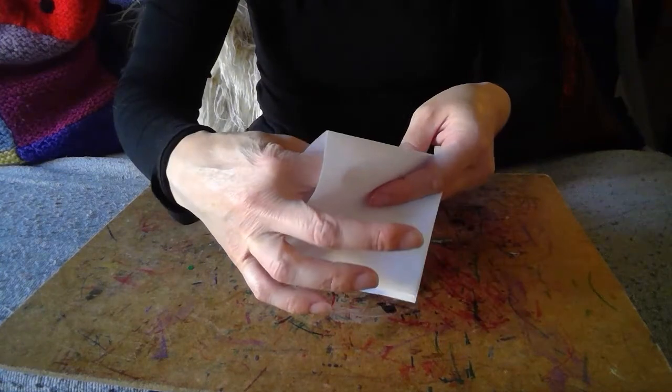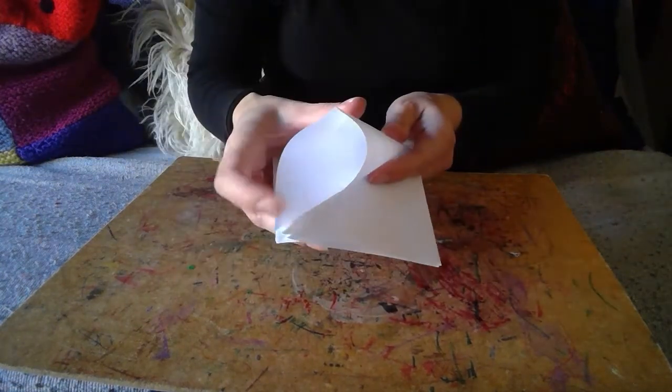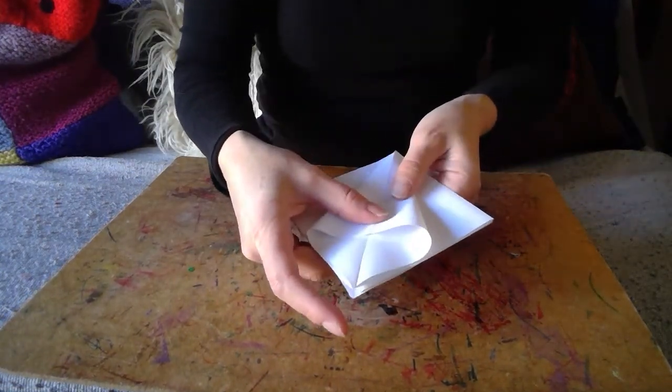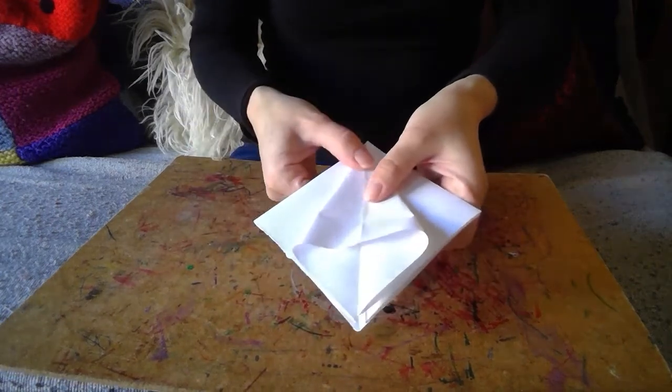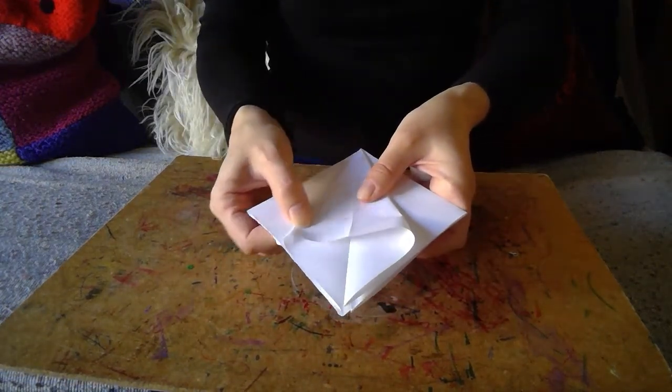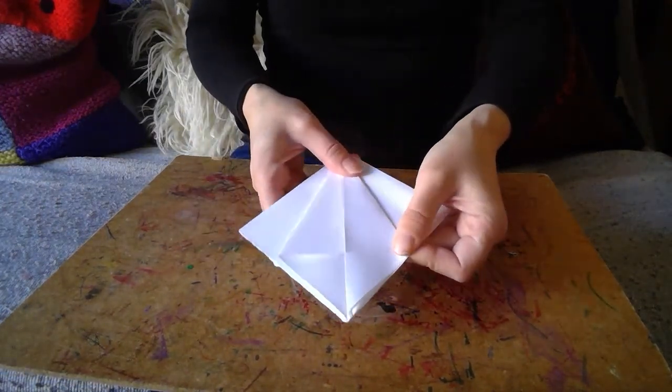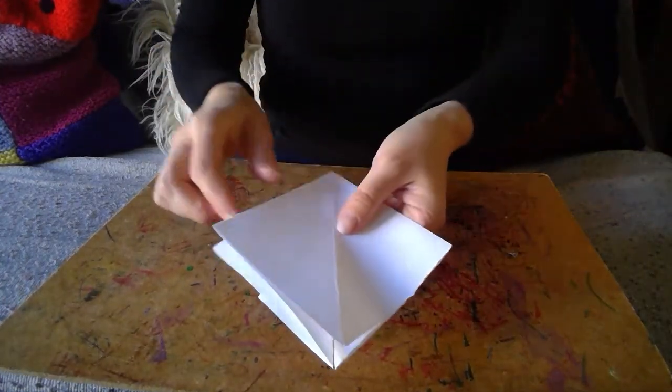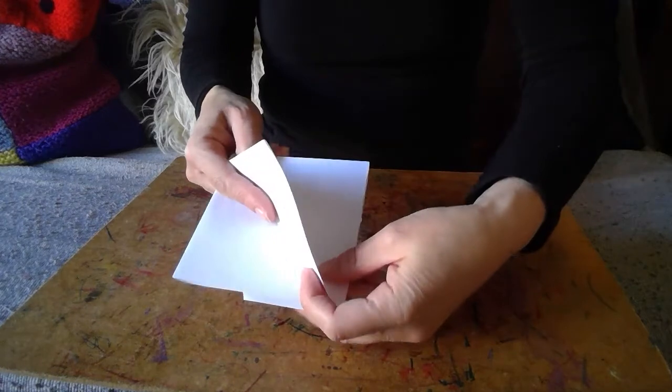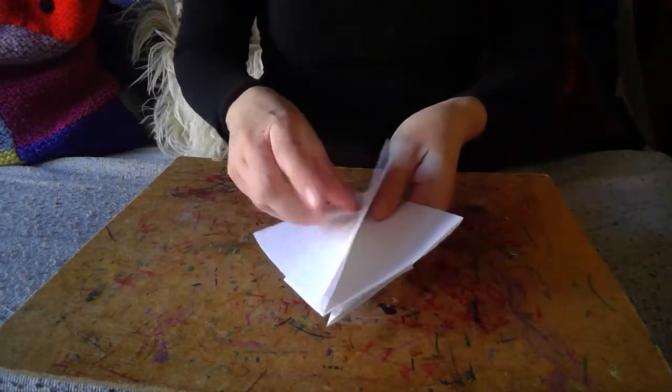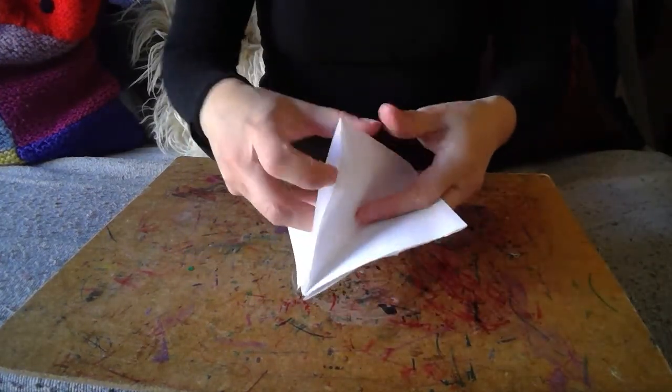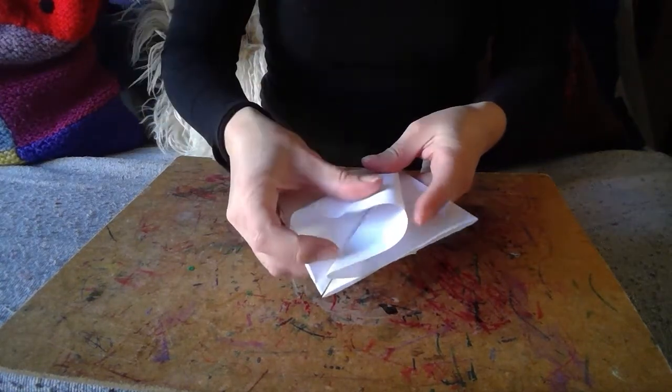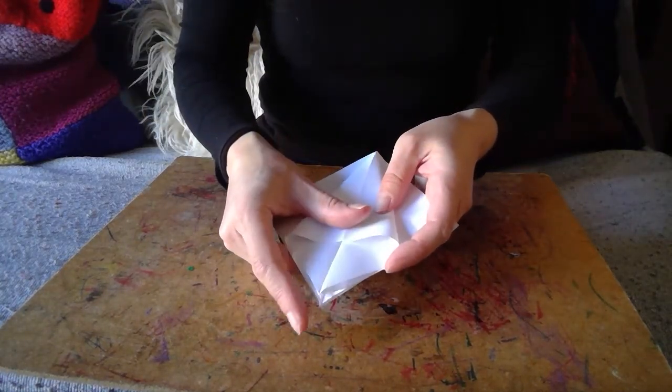And I'm going to pop my finger in and squash it down. It forms like a little kite shape. Like a whole journey that we go through with this. And I'm going to do this on each side. As a symmetry of four. Little flaps. Pop my finger in. Squash it down.